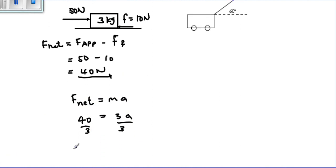So we can say that 13.3 meters per second squared is the acceleration of this object. This object will move to the right because we are taking right as positive. So this 3 kilogram object will accelerate to the right at 13.3 meters per second squared.